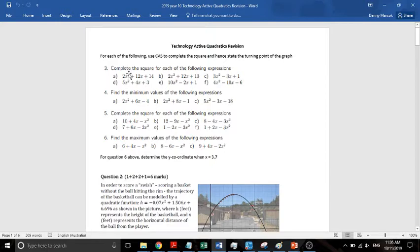So we're looking at for each of the following, we're going to use CAS to complete the square and then we're going to state the turning point of the graph. We're not going to do it for all of them, we're going to do it for one of each of the things because you do it exactly the same way. And then for question 6 above, for this one we're going to go through how to find the y-coordinate when x equals 3.7.